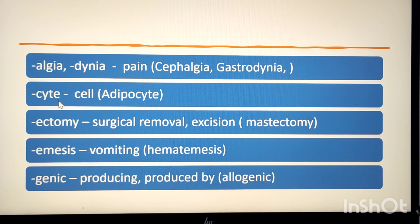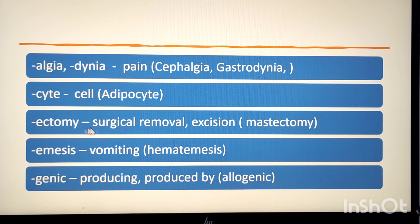The next suffix is -cyte, which means cell. Example: adipocyte. Adipo means fat, cyte means cell, so adipocyte means fat cell. The next suffix is -ectomy, which means surgical removal or excision.